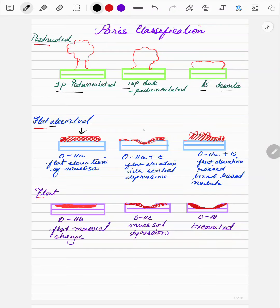So 02A is a flat elevation of the mucosa. A plus C is flat elevation of the mucosa and there will be a central depression. So C stands for central depression.